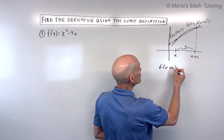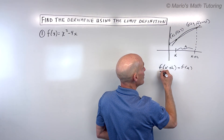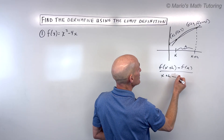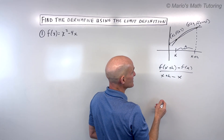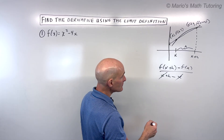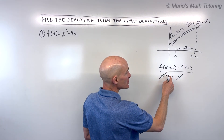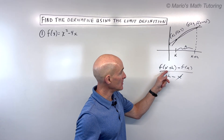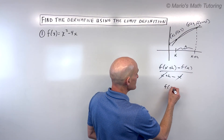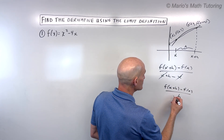So in this case, y2 is f of x plus h, minus y1, which is f of x, all over x2, which is x plus h, minus x1, which is x. Notice the x's cancel because one's positive and one's negative. This is oftentimes referred to as the difference quotient — difference means you're subtracting, quotient means you're dividing. Written more simply: f of x plus h minus f of x, all over h.